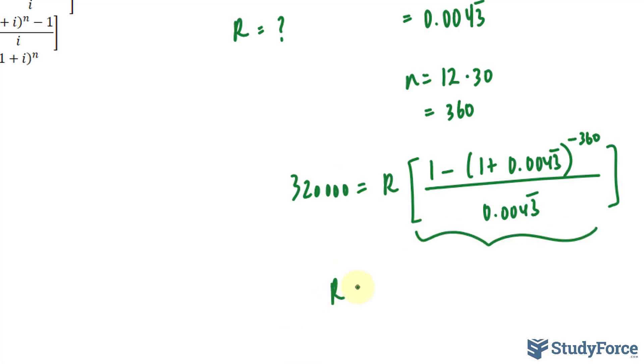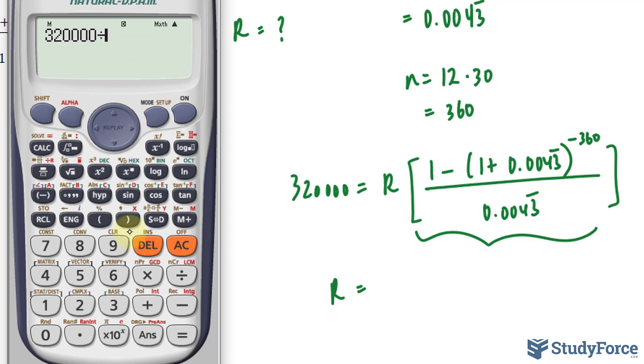And that will give us a value for R. So 320,000 and in parentheses, or in brackets in this case, we have that expression. 1 minus 1 plus 0.0043. Notice that I incorporated more 3s.